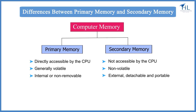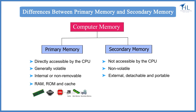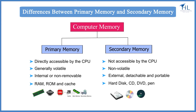Examples of primary memory are RAM, ROM, and cache. Examples of secondary memory are hard disk, CD, DVD, pen drive, etc.